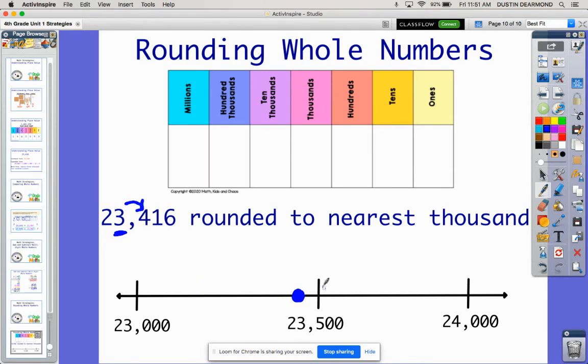And so when we talk about rounding, we know that if it's halfway or more, it rounds up. And if we are less than halfway, we're going to round backwards down to that whole number below. So the number 23,416 would round down to 23,000 when we're talking about the thousands place.